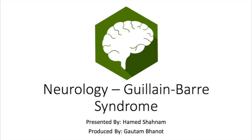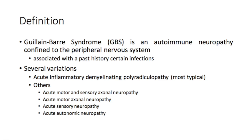In today's discussion we'll be covering Guillain-Barré syndrome. As always, we like to start by defining what the disease we're encompassing is all about. Guillain-Barré syndrome is an autoimmune neuropathy confined to the peripheral nervous system, and is associated with a past history of certain infections or illnesses, which I'll talk about in a moment.